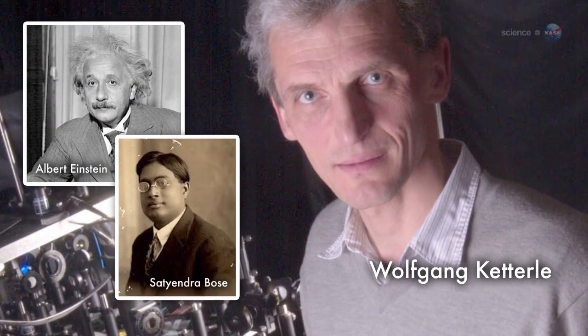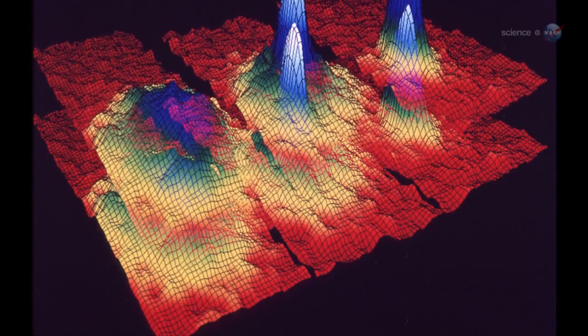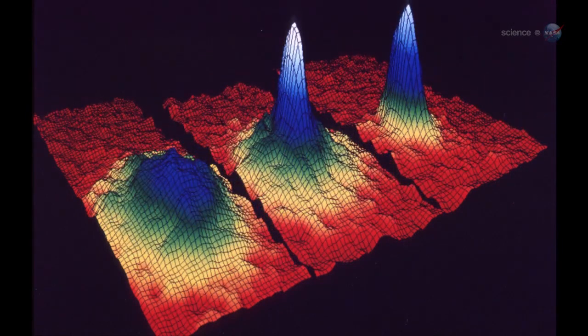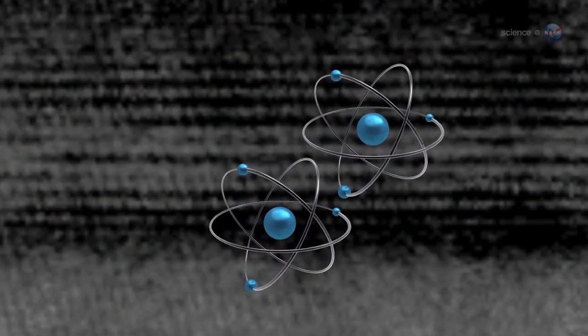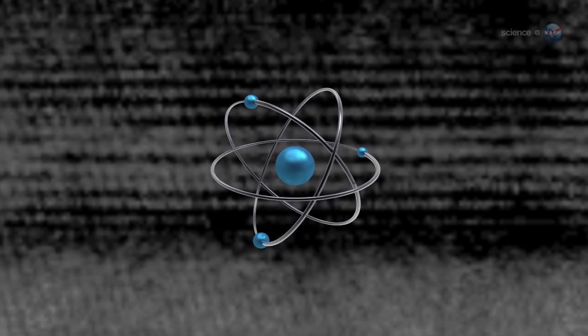If you create two BECs and put them together, they don't mix like an ordinary gas. Instead, they can interfere like waves. Thin, parallel layers of matter are separated by thin layers of empty space. An atom in one BEC can add itself to an atom in another BEC and produce no atom at all.